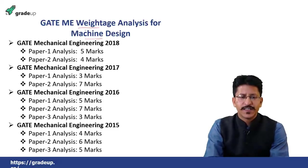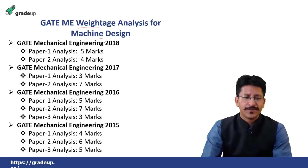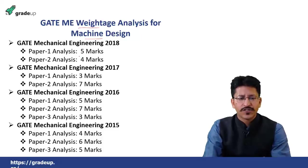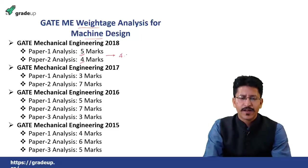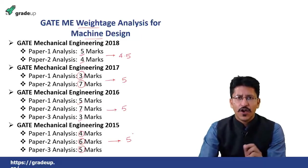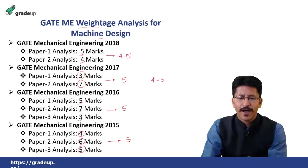Let us see the weightage of machine design in the recently concluded GATE examinations. We have taken trends from the last four years, 2015 to 2018. In 2018, paper one had five marks and paper two had four marks, giving an average of 4.5. In 2017 it was three and two marks averaging five, and in the other years the average also comes to about five marks.